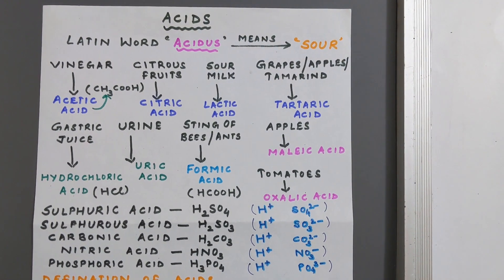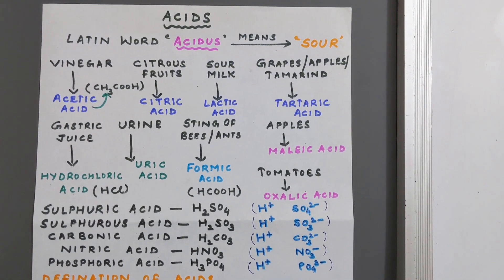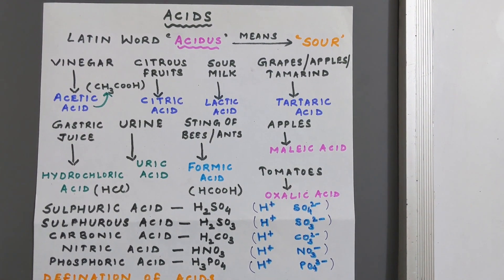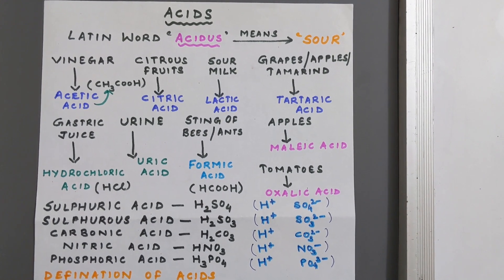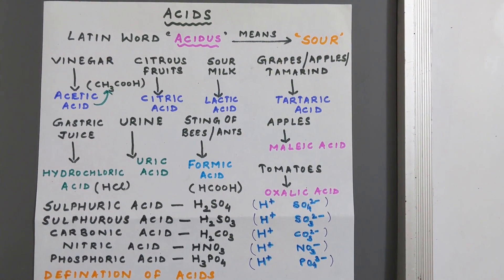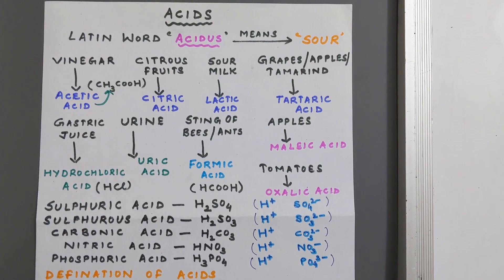Vinegar, which is known as circa used at home, contains acetic acid CH3COOH. Citrus fruits like lemons and oranges contain citric acid.